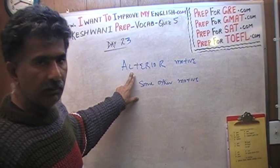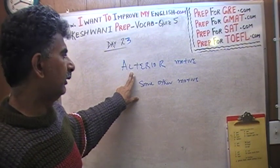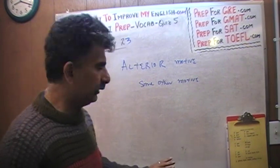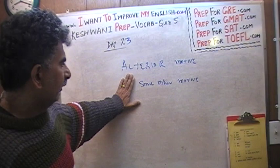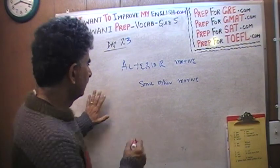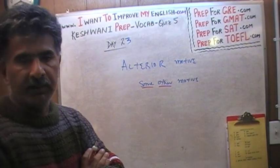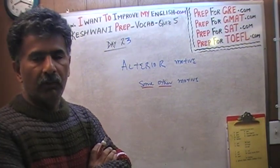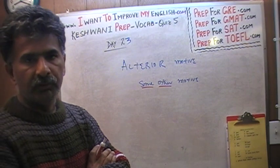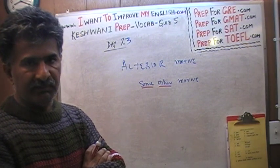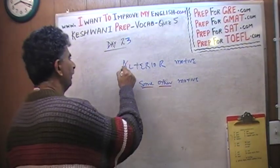There are two reasons I wanted to cover this word. First, people think that ulterior simply means 'some other' — well, that is correct, but that is not the full extent of the meaning; they are leaving out the nuance. Second, people have a tendency to misspell it — they tend to spell it with an A for some reason. It is spelled with a U.